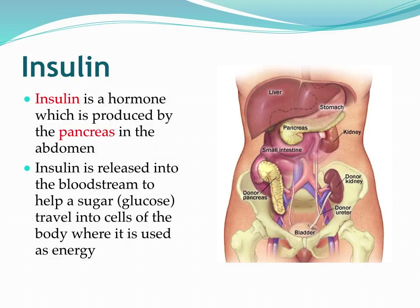Insulin is the mechanism by which glucose is transported into the cells of the body where cellular level metabolism occurs — in all of the organs of the body, whether it be the brain, the heart, the lungs, the liver, and so on. We need insulin to take the food we eat and convert it into energy so we can metabolize at the cellular level and continue to function as individual organ systems and as a whole individual.